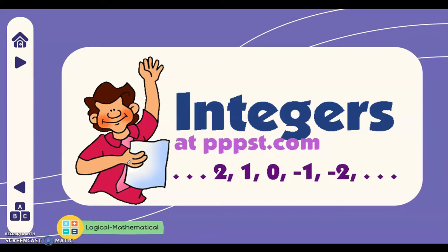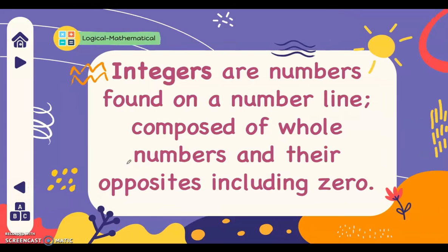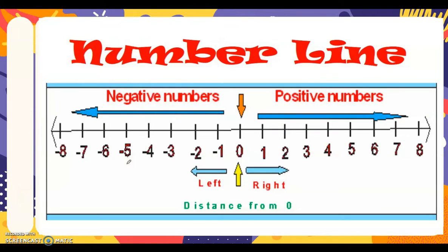Good day everyone. Today we will be talking about integers. Integers are numbers found on a number line, composed of whole numbers and their opposites, including zero. Let us visualize integers using a number line. Numbers on the right are positive integers, in the middle is zero, and numbers on the left are negative integers.